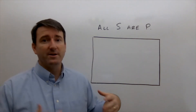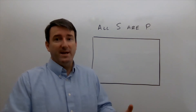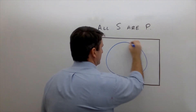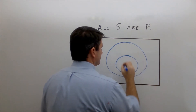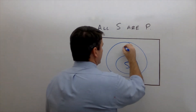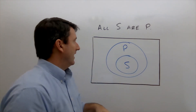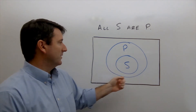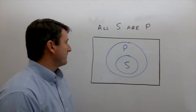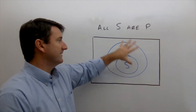Now let's draw Venn diagrams for each. For All S are P, the Venn diagram looks like a subset diagram: a larger circle with a smaller circle inside. The smaller circle is the subject set S and the larger circle is the predicate set P. The example is 'All whales are mammals' — if an animal is a whale, then it is also a mammal.